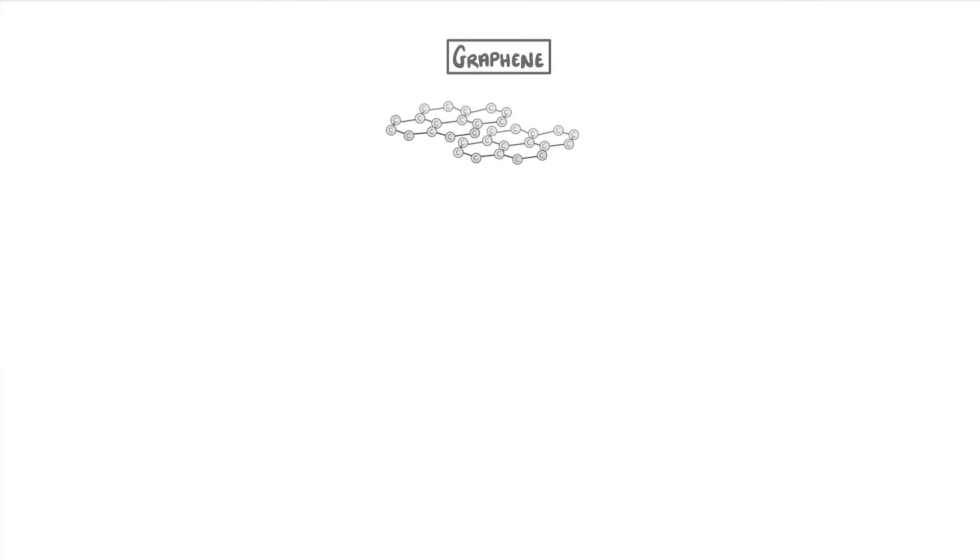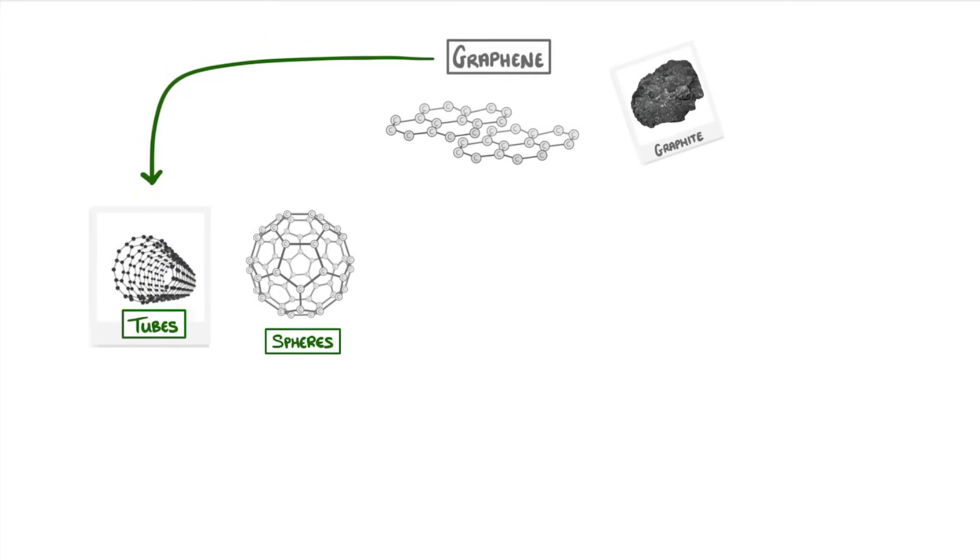Now graphene is completely natural, and we can get it from the ground in the form of graphite. But what scientists have started to do is take these strong but tiny sheets and make stuff out of them, like tubes. They've also made similar sheets but with pentagons or heptagons, which make the sheets curve into spheres.